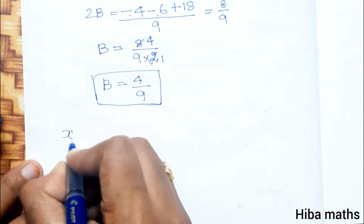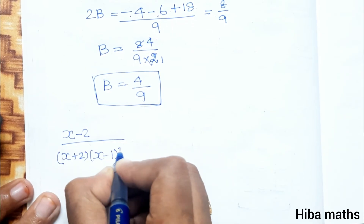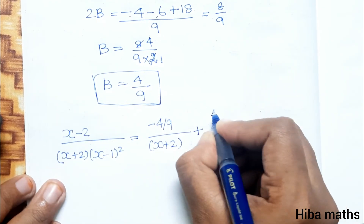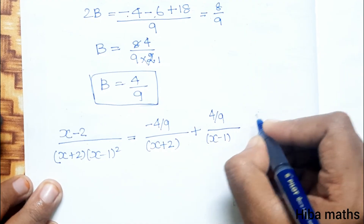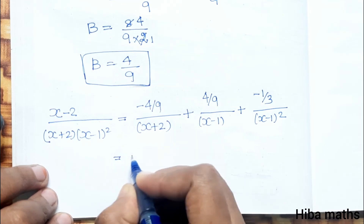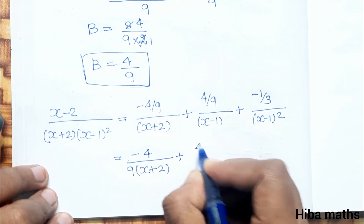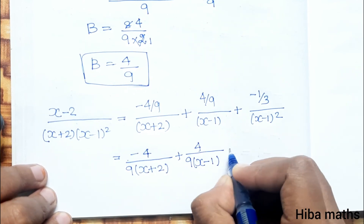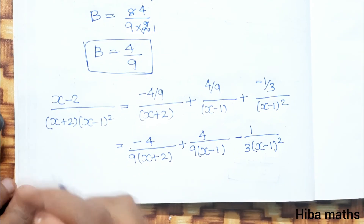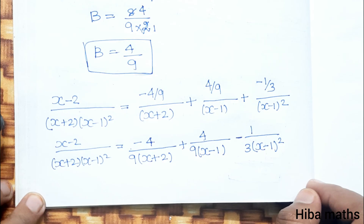The final answer: x minus 2 divided by x plus 2 into x minus 1 whole square equals minus 4 by 9 divided by x plus 2, plus 4 by 9 divided by x minus 1, minus 1 by 3 divided by x minus 1 whole square. That is minus 4 over 9 into x plus 2, plus 4 over 9 into x minus 1, minus 1 over 3 into x minus 1 whole square. That completes the solution. Thank you so much for watching.